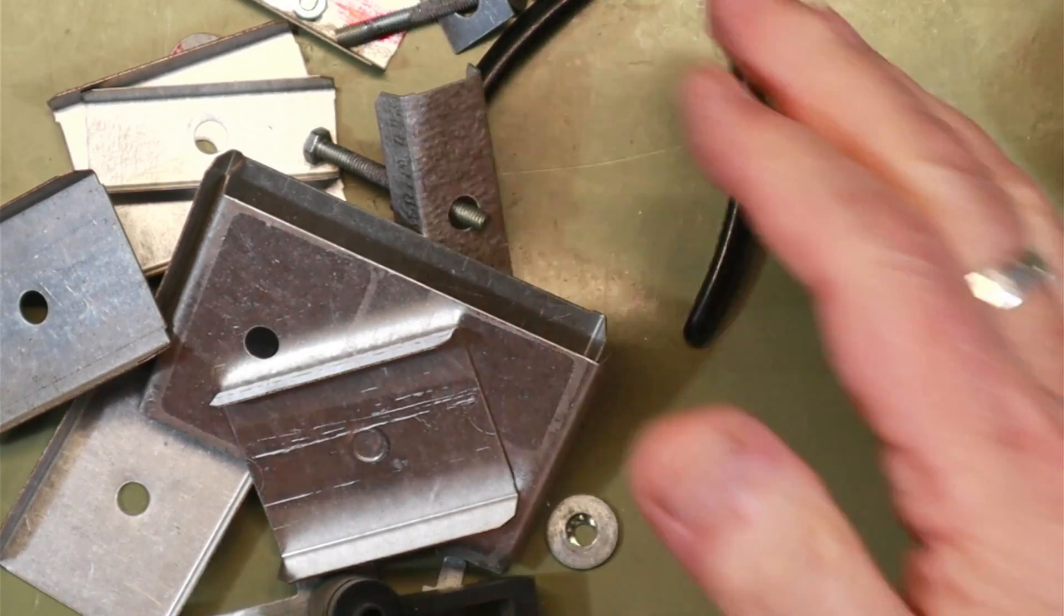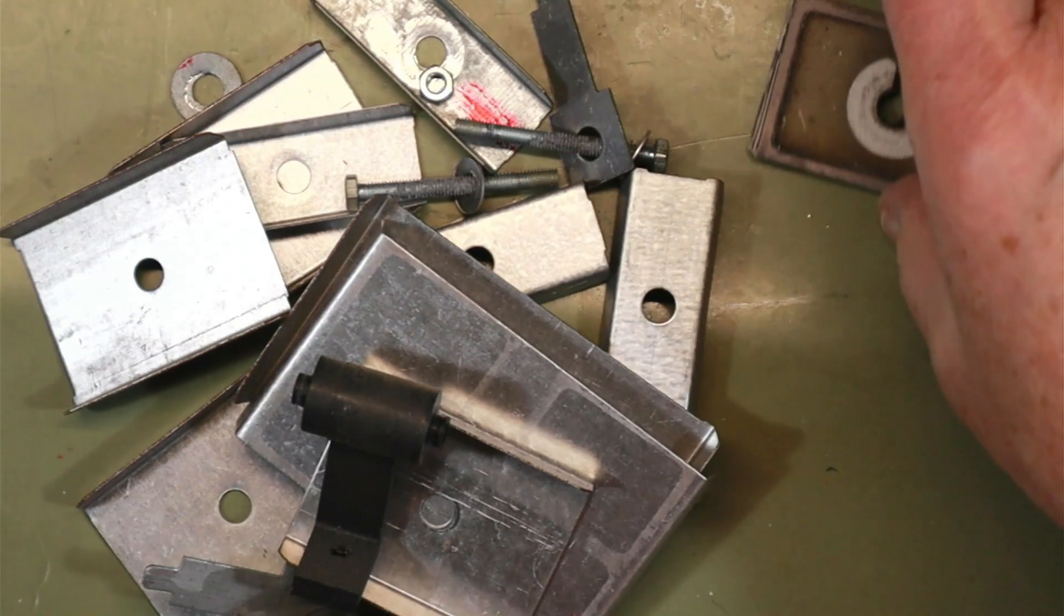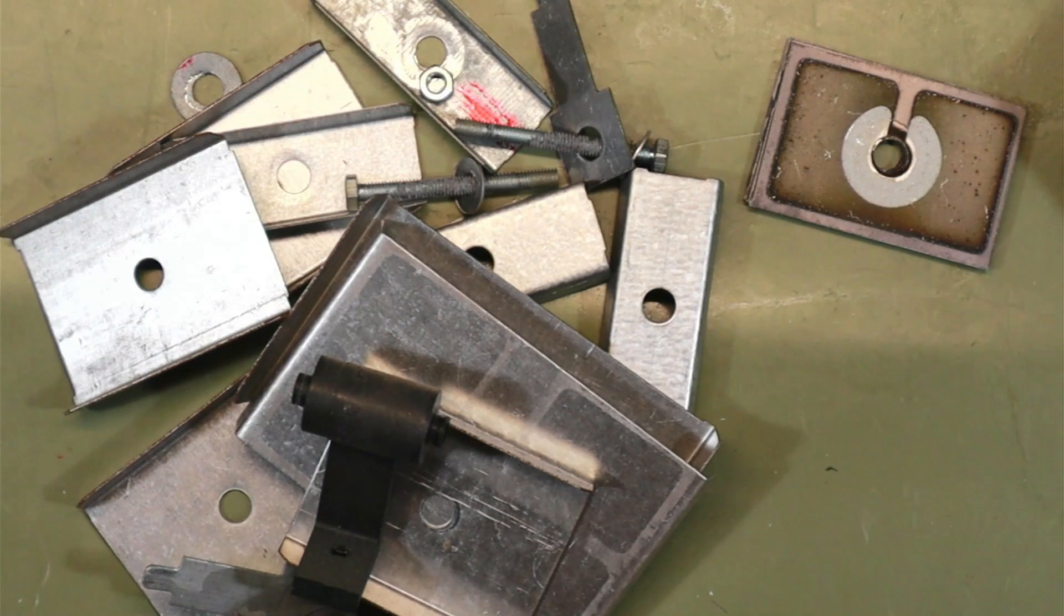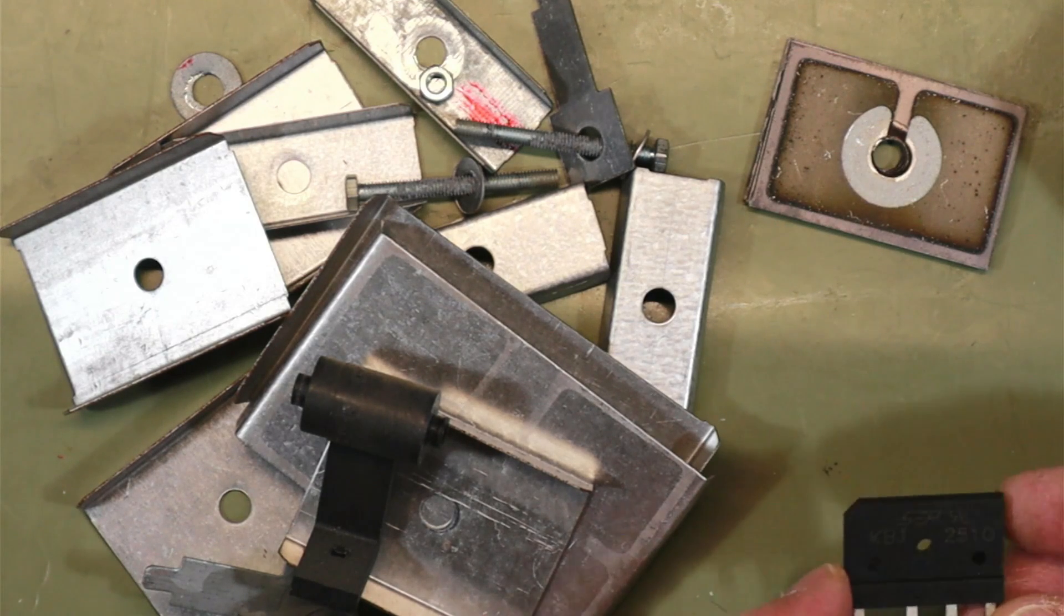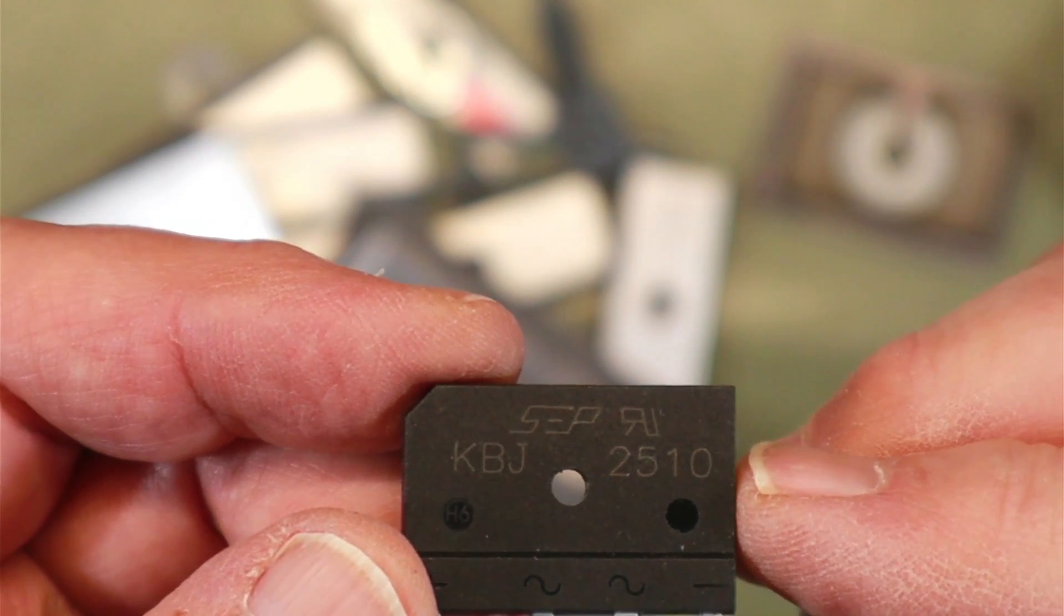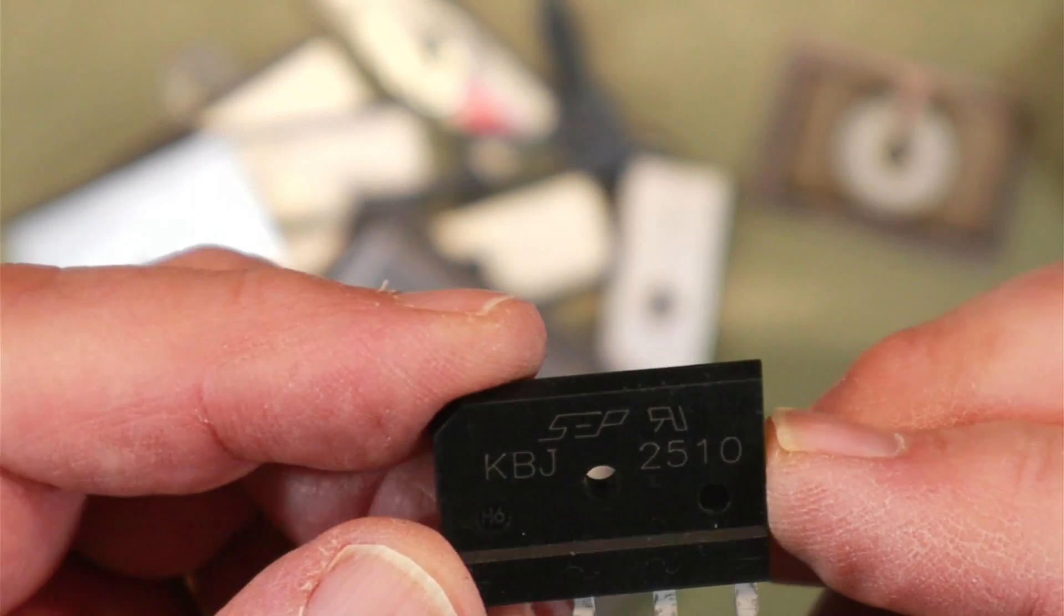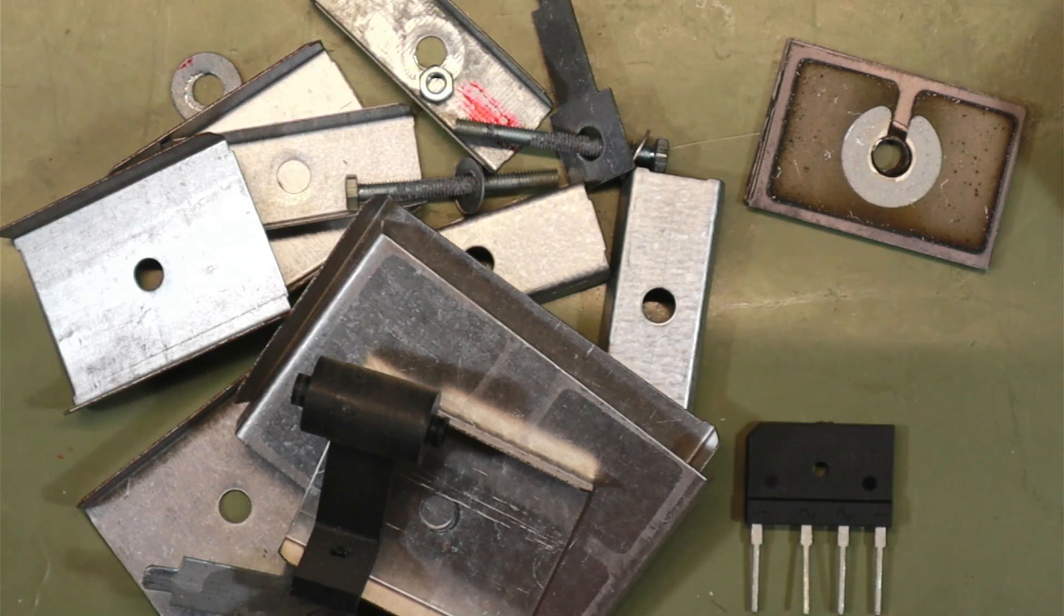And I am going to replace all of that with this, which is a KBJ 2510, which is a 25 amp bridge rectifier. It'll do about 4 amps without a heat sink, 25 amps with a heat sink, and for a pulse about 300 amps.